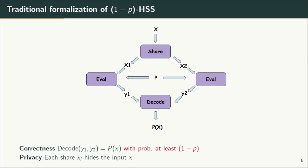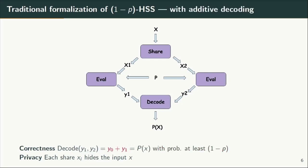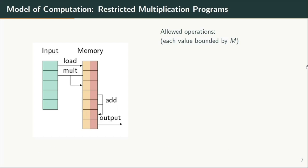We will specifically be looking at 1-p HSS constructions where correctness is allowed to fail with some probability p. Another interesting variant of HSS is the one where the decode function is a simple addition operation — we call such a construction HSS with additive decoding. This simplistic decode function opens up a large number of applications in crypto where HSS could be a viable solution. Including our work, most research literature on HSS has focused on restricted multiplication programs as the model of computation, also known as the RMS model of computation.